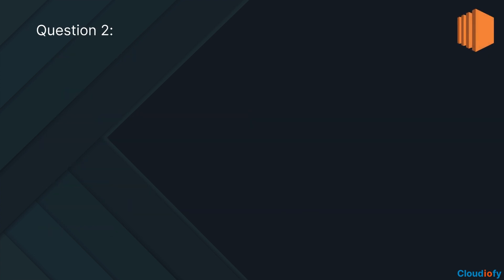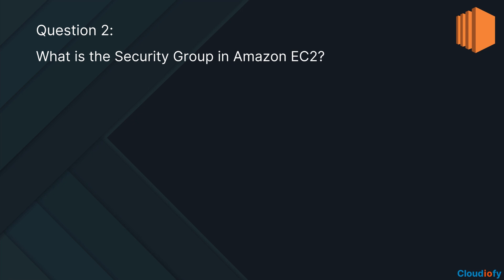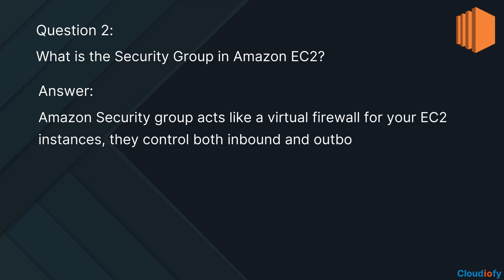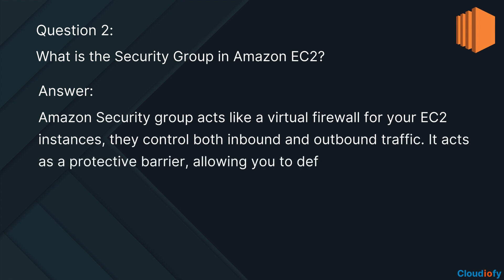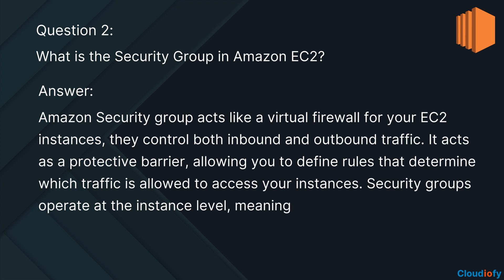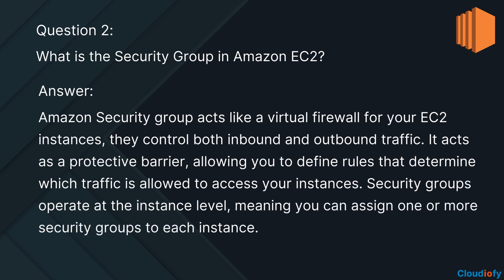The next question is: what is the security group in Amazon EC2? Amazon Security Group acts like a virtual firewall for your EC2 instances. They control both inbound and outbound traffic, acting as a protective barrier, allowing you to define rules that determine which traffic is allowed to access your instances. Security groups operate at the instance level, meaning you can assign one or more security groups to each instance.